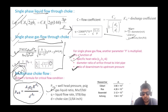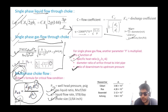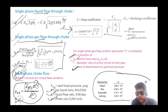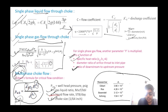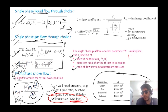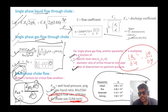An important point about choke size: it is always expressed in units of 1/64 inch (e.g., 12/64 inch, 16/64 inch). Now, summarizing the complete system: from IPR and TPR we get the operating point at bottom hole. Changing the node to the wellhead, we construct the wellhead performance curve and select the optimum choke using the choke performance curves.